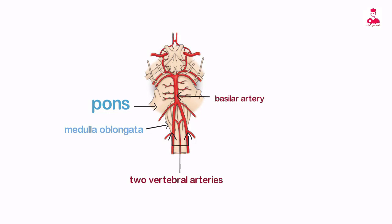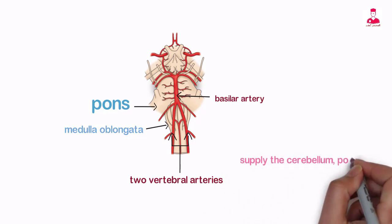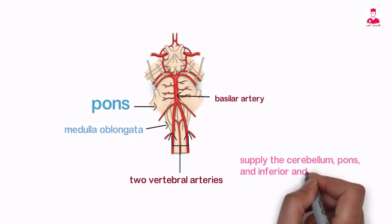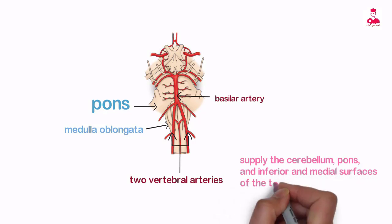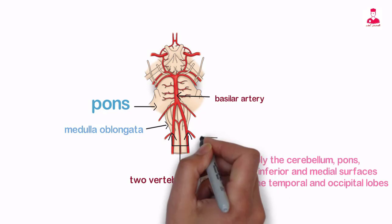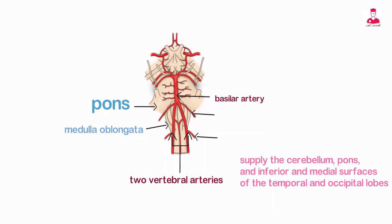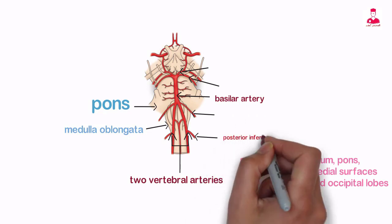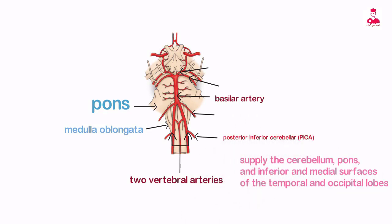The vertebral and basilar arteries give rise to several pairs of smaller arteries that supply the cerebellum, pons, and inferior and medial surfaces of the temporal and occipital lobes. The four major pairs of arteries are listed in order from inferior to superior: posterior inferior cerebellar, PICA.